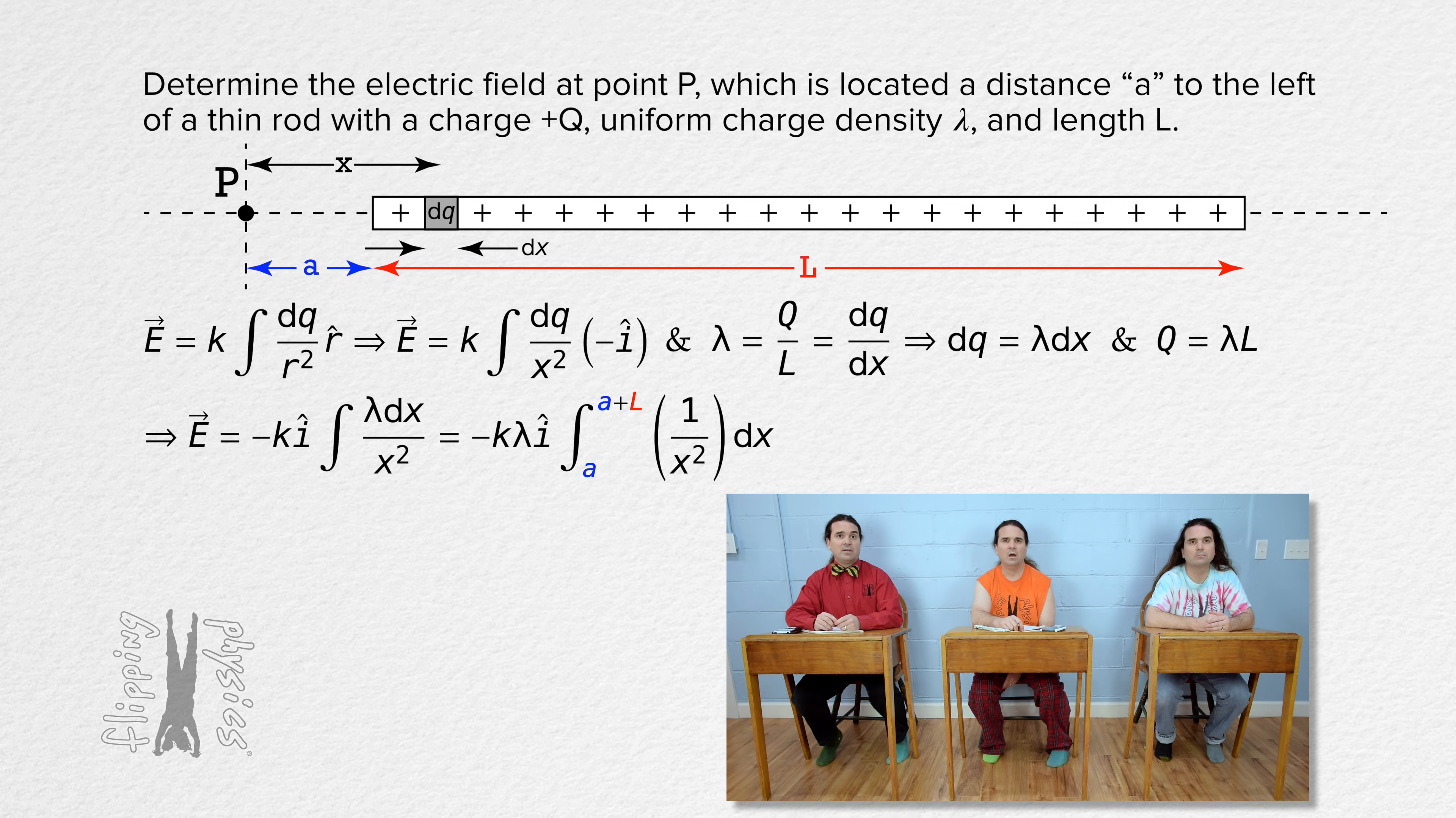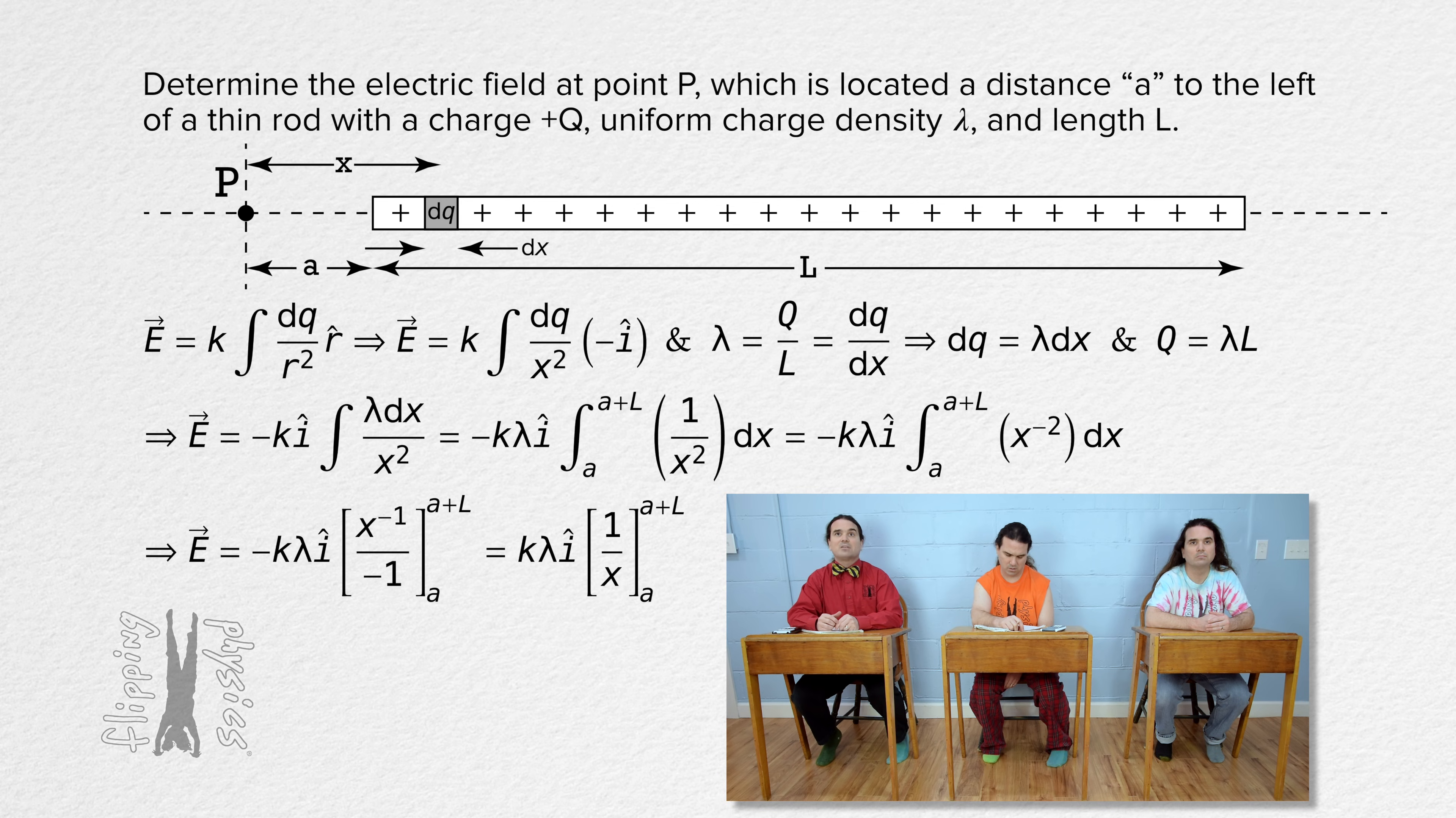The inverse of x squared is the same as x to the negative 2 power. The integral of x to the negative 2 power with respect to x equals x to the negative 1 power divided by negative 1. The negatives cancel one another out, and x to the negative 1 power is the same as the inverse of x.